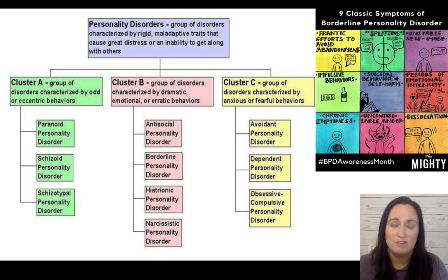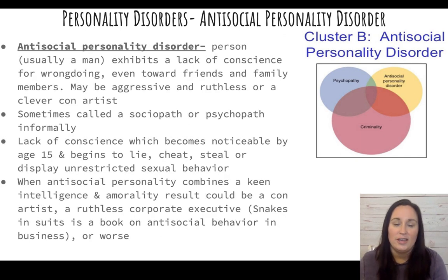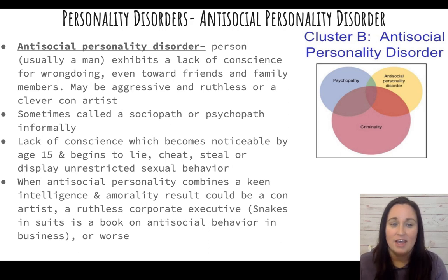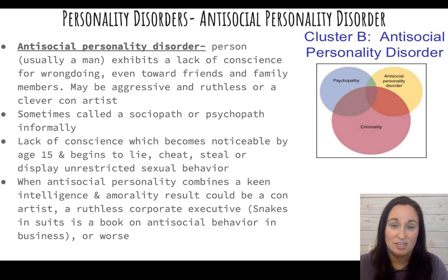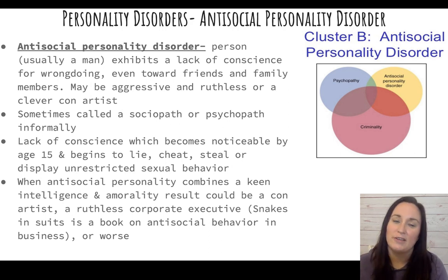There's a chart with more detail on personality disorders — pause to look if curious, but you only need to know what was listed. Antisocial personality disorder typically presents in men and involves a lack of conscience for wrongdoing even toward friends and family, lack of empathy, and sometimes aggression. Research suggests CEOs have a higher rate of antisocial personality disorder. It's sometimes informally called sociopath or psychopath, but those terms aren't in the DSM.